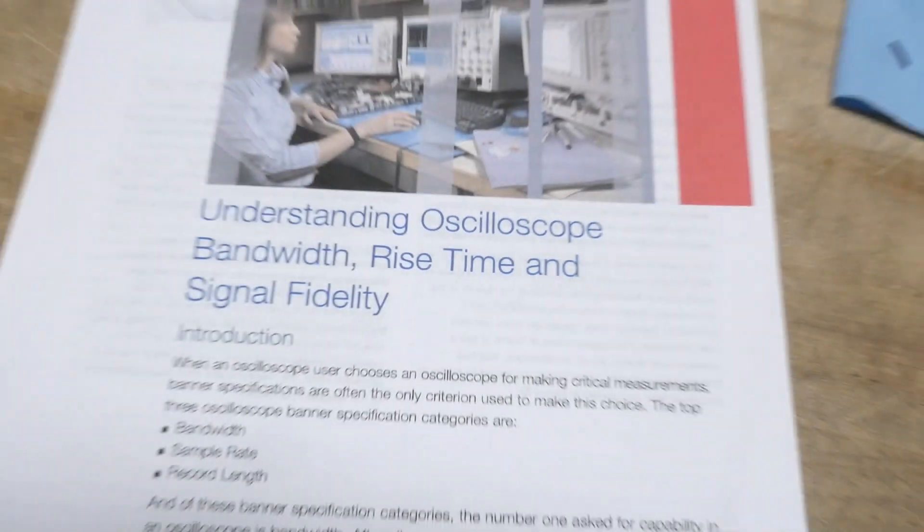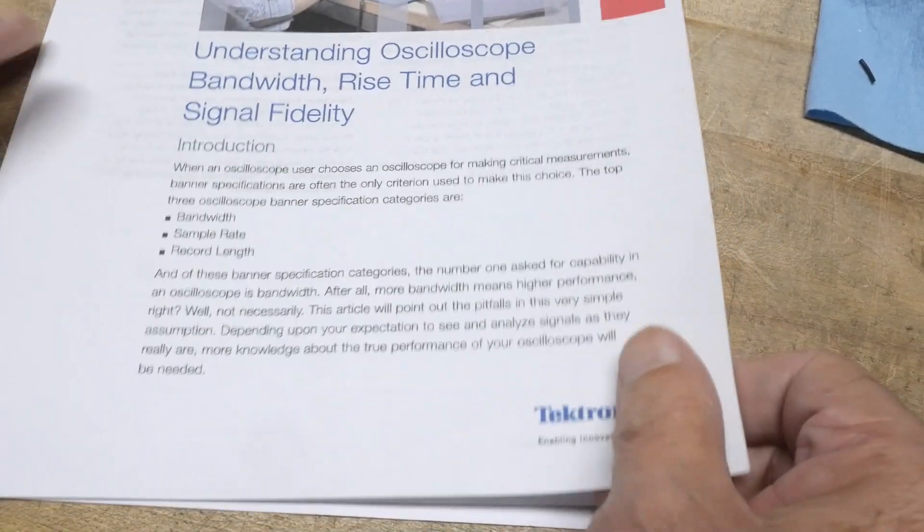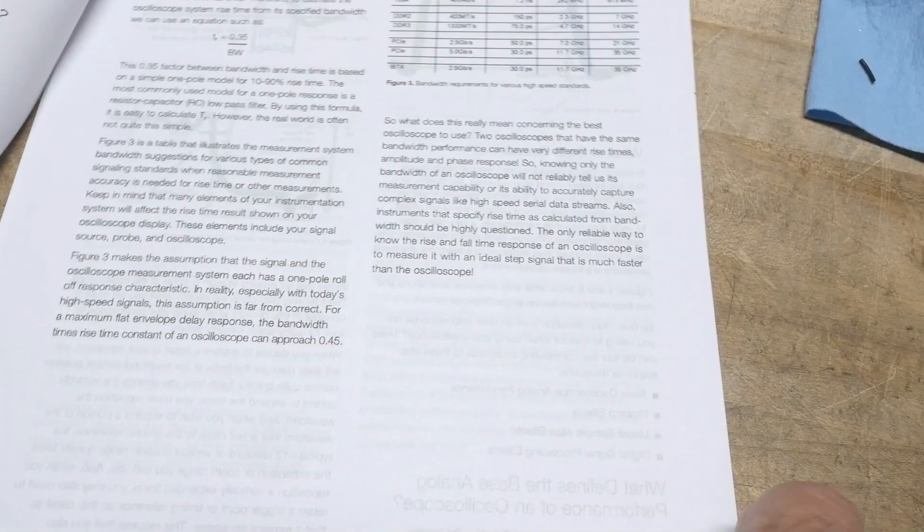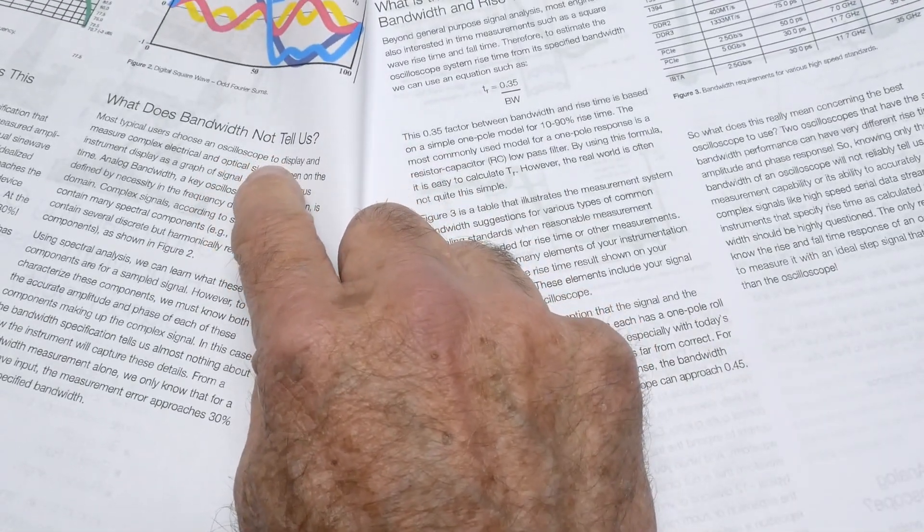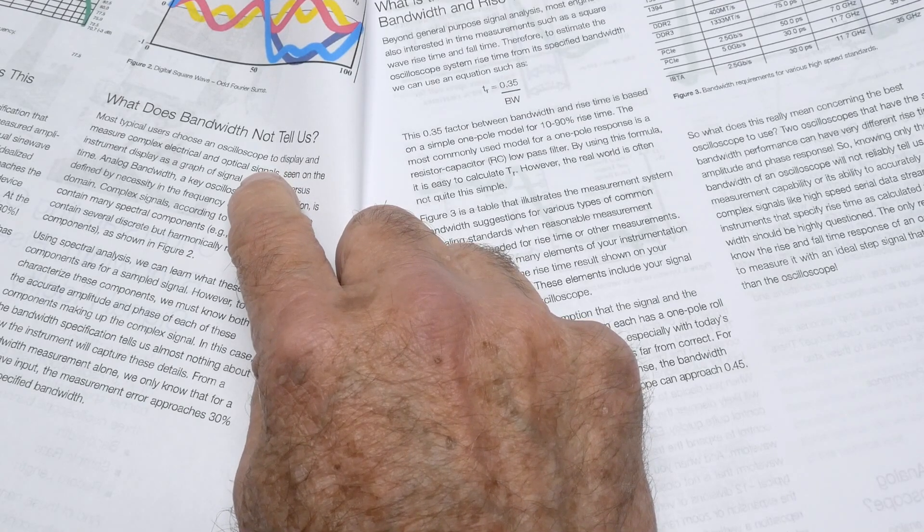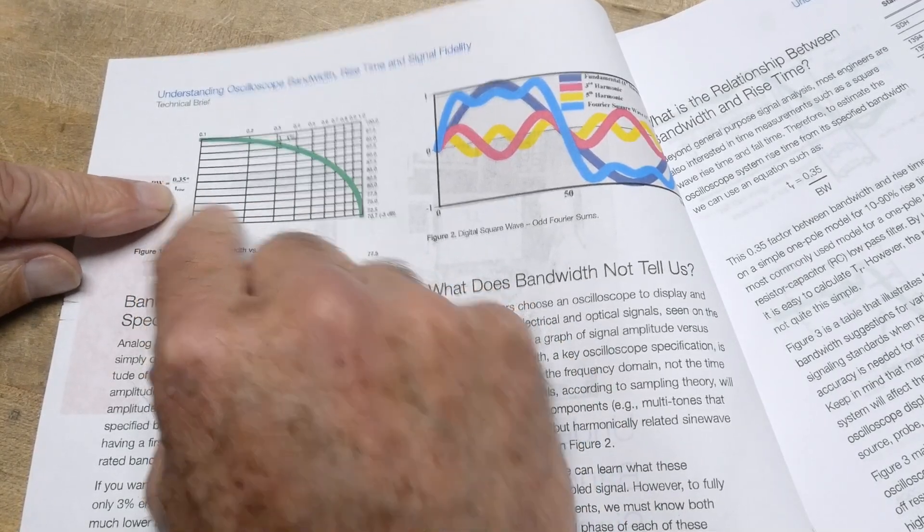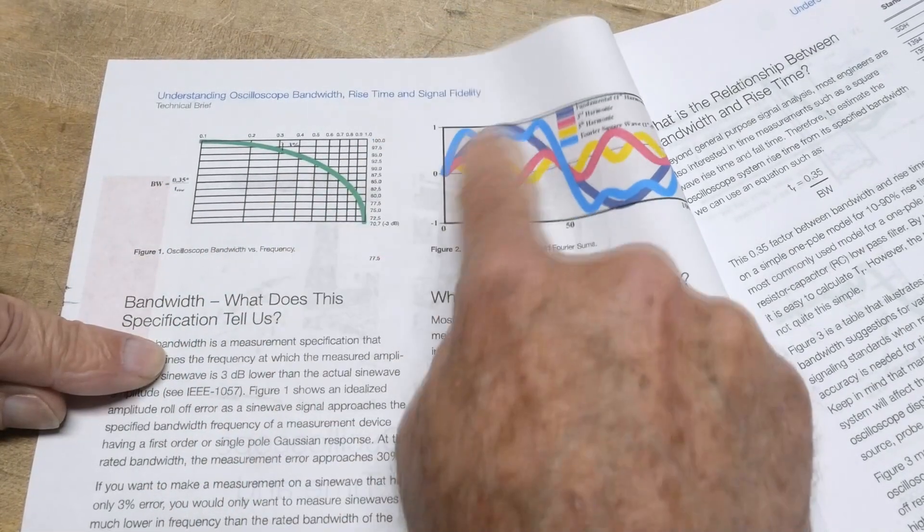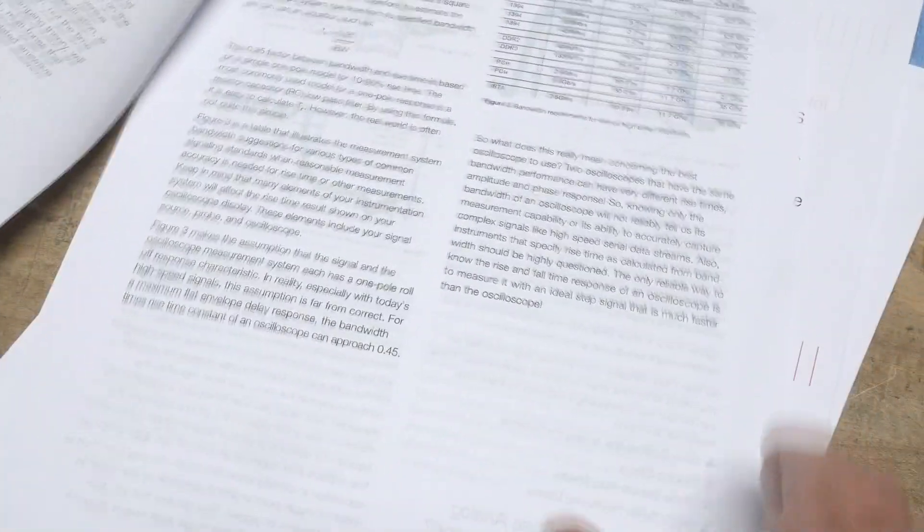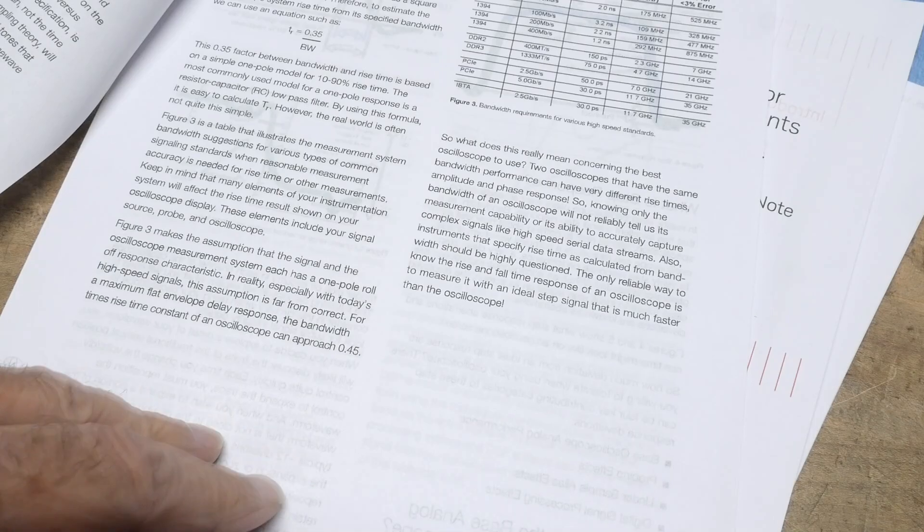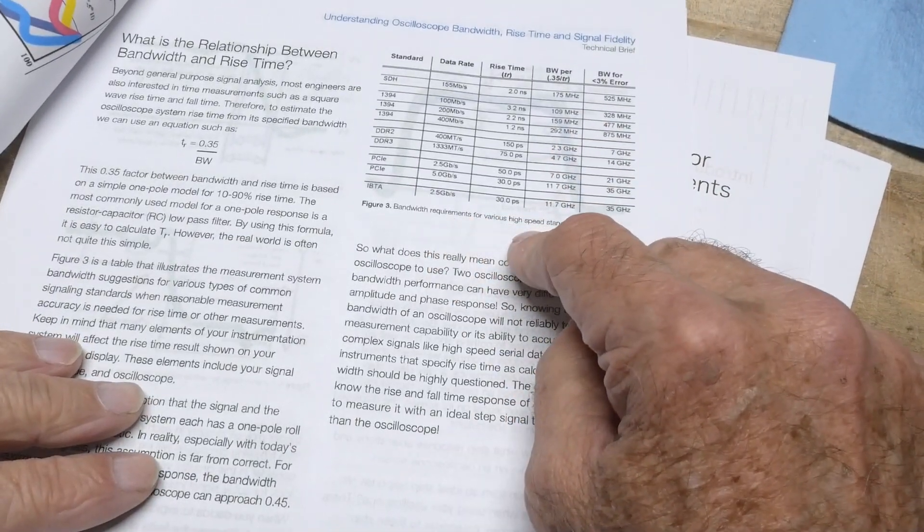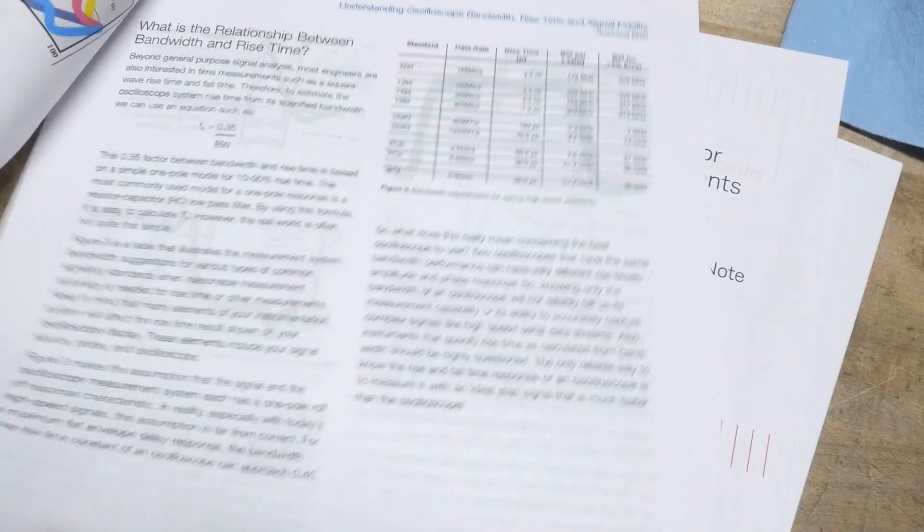So this is a technical brief by Tektronix. I think they know something about oscilloscopes, and they talk about what does bandwidth not tell us. There's this cool chart here. It says the bandwidth is 0.35 divided by the rise time. And you can see that square waves will do funny things. Anyway, you can read this and take a look at a bunch of requirements for particular things. Here's this formula again, 0.35 divided by bandwidth.